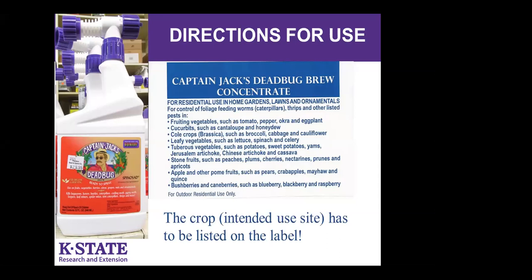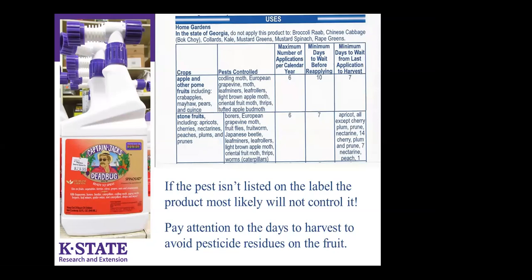Looking at Captain Jack's label for apples and other pome fruit — home fruit would be crab apples, mayhaw, pears, and quince. The pests it controls include coddling moth, European grapevine moth, leaf miners, leaf rollers, etc. If the pest is not listed, it's not going to control it. Also look at the boxes for maximum applications per year — for apples you can use this product six times over the course of a year, wait 10 days between applications, and wait seven days between the last application and harvest, ensuring no residues remain on the fruit.